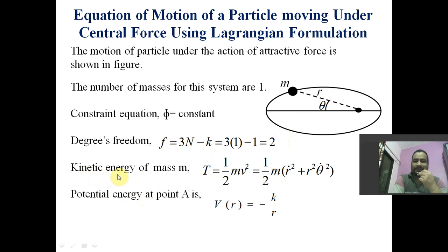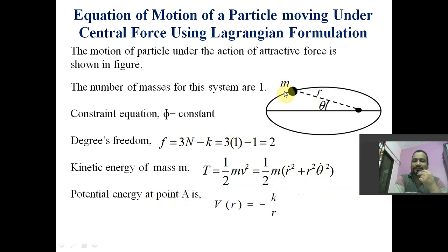Let us find the kinetic energy of mass m. T is equal to half m v squared. This basic equation becomes one half m times r-dot squared plus r squared theta-dot squared, which is the kinetic energy for two-dimensional motion in spherical polar coordinates.